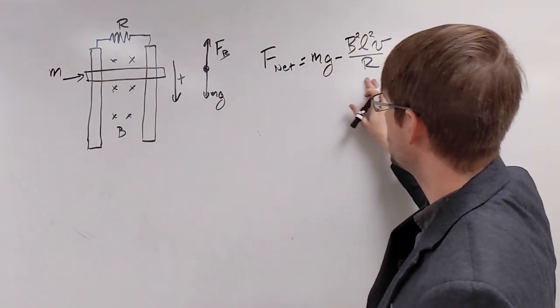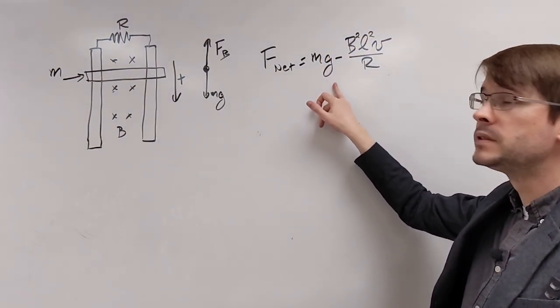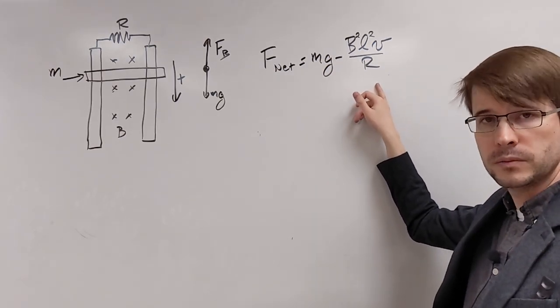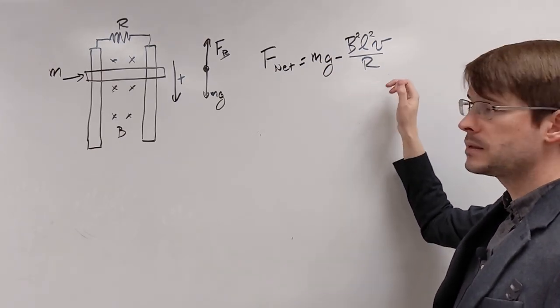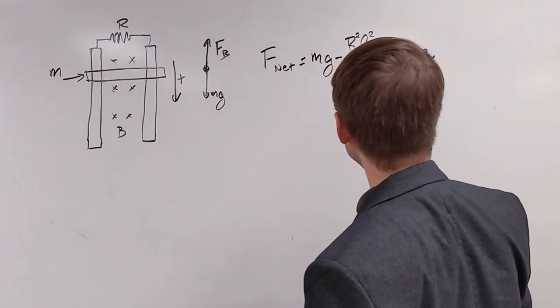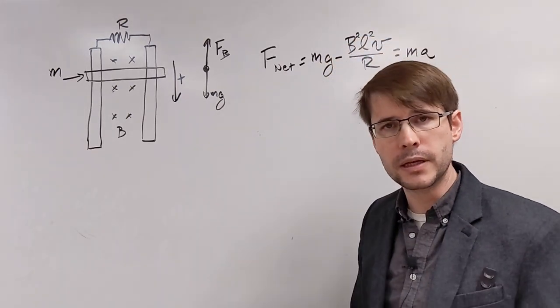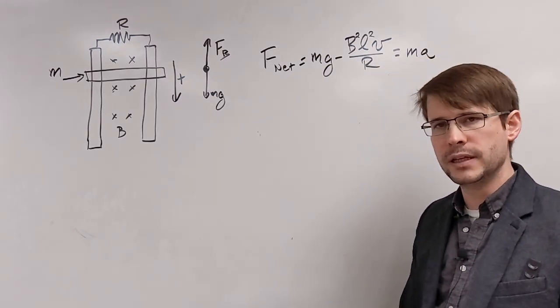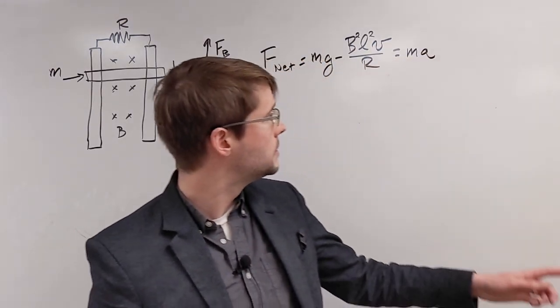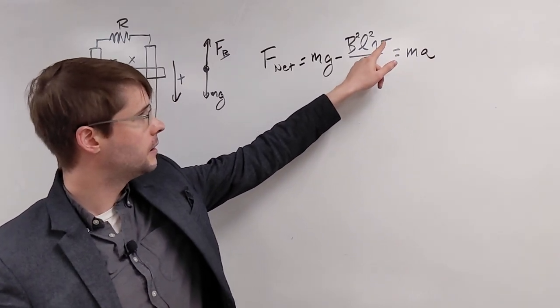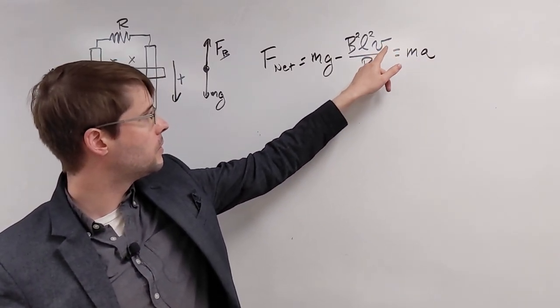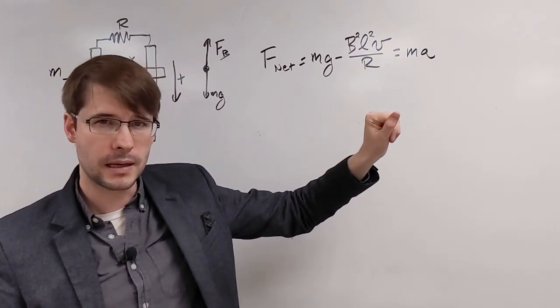All right, so here's our expression for the net force, the gravity force minus the magnetic force that we've seen a couple times now. This is going to be equal to ma. And so now we have an equation that we can look at and work with. This is actually a differential equation because notice a and v, these can be written in similar ways. I'm going to rewrite this just real quick.